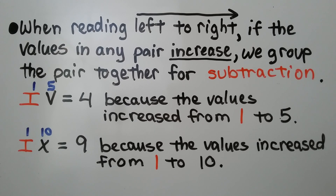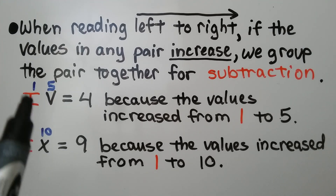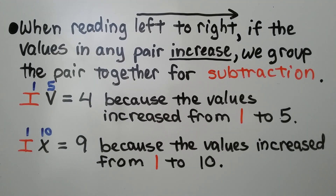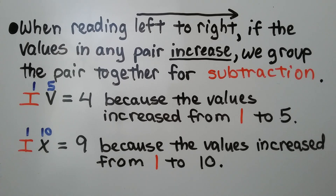When reading left to right, if the values in any pair increase, we group the pair together for subtraction — that makes a subtraction pair. Because the values are going from 1 to 5, they're increasing, so we have a subtraction pair: 5 minus 1 equals 4. Likewise, going from a 1 to a 10, the values are increasing — that makes a subtraction pair equal to 9, because 10 minus 1 equals 9.